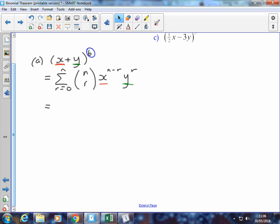So we can substitute in and say that we're really looking for the sum from r equals 0 to 6 of 6 choose r. The first term is x in this case, so it's x to the power 6 minus r. The second term is y, so it's y to the power r.